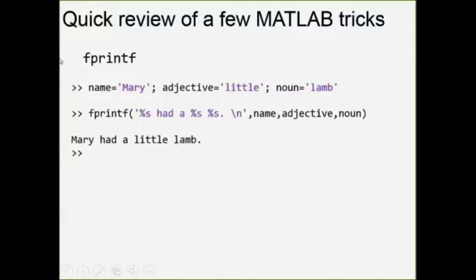Hopefully you've run into the fprintf command at some point. It gets its name from the C programming language. So if I take a few variables — name equals 'Mary', asif equals 'little', and al equals 'lamb' — and use fprintf with escape sequences, everywhere there's an escape sequence it uses a fill-in-the-blank routine to plug those values in. That's going to print out 'Mary had a little lamb' in this example.